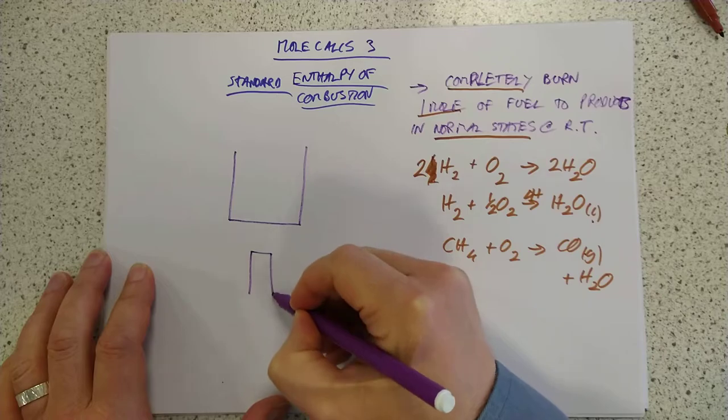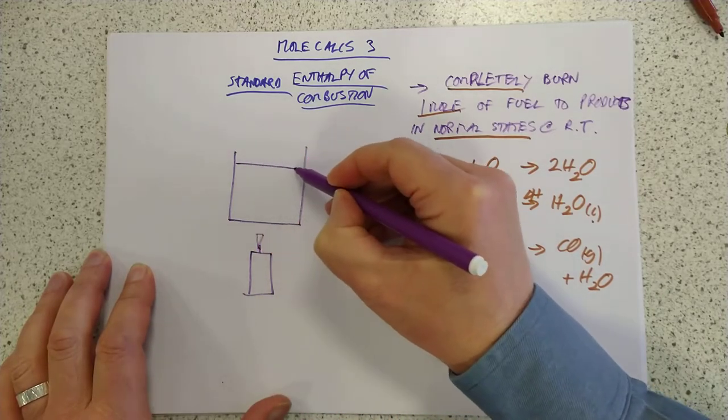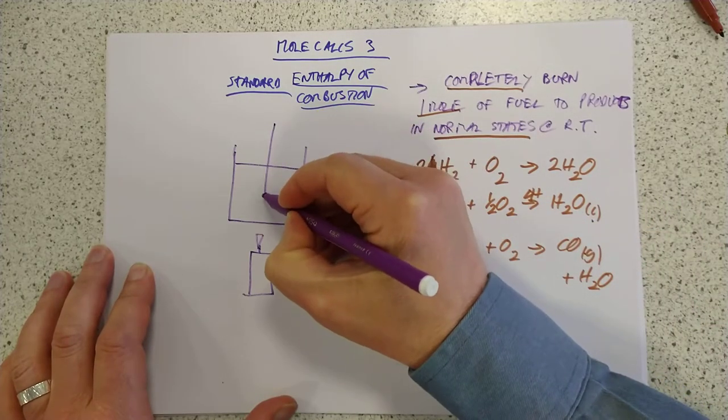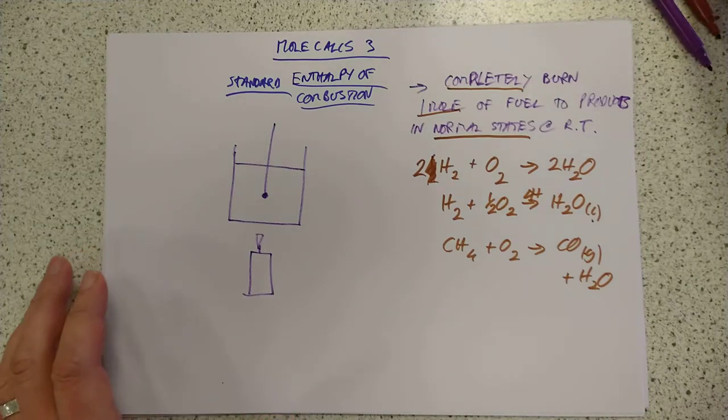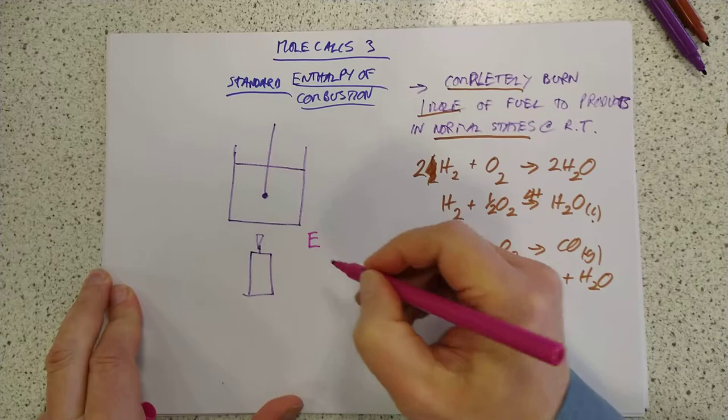But anyway, let's have a quick look at how we do the experiment and the calculations that go with it. It's very similar to National 5. There's just one more thing added on. You would have a fuel here. That's meant to be a candle. You would have a liquid that you're heating up, which 99% of the time is water. You'd have a thermometer in the liquid. And if you cast your minds back to National 5, the energy, we called it, but it's actually enthalpy,